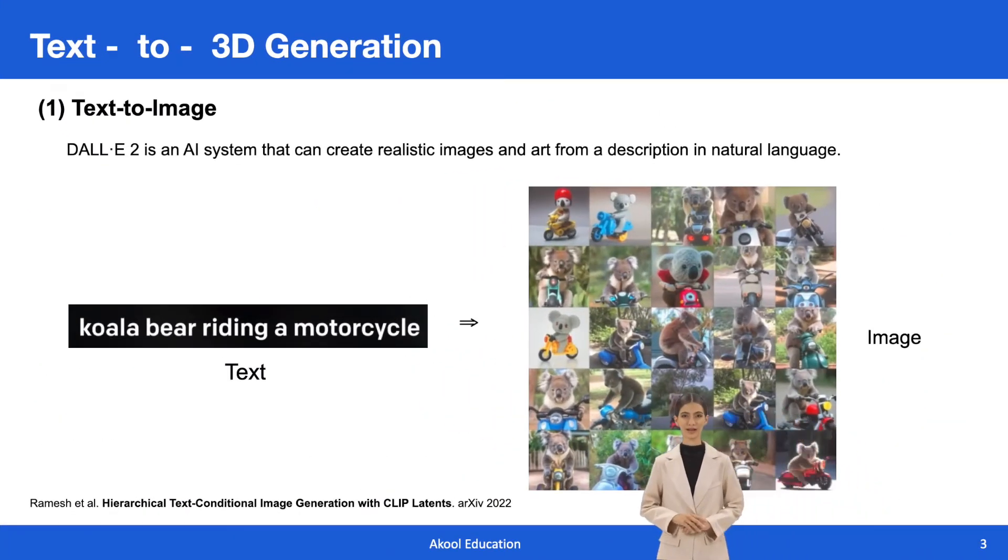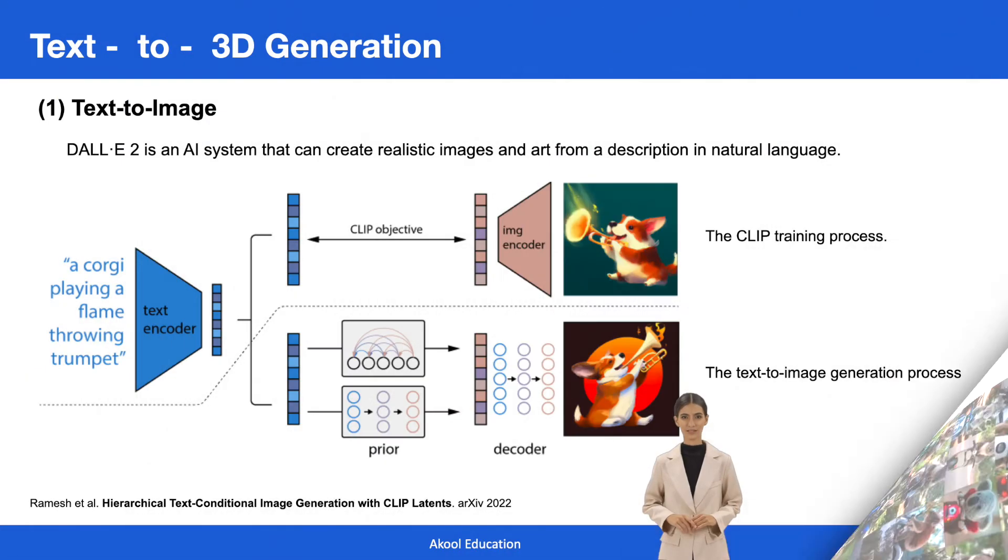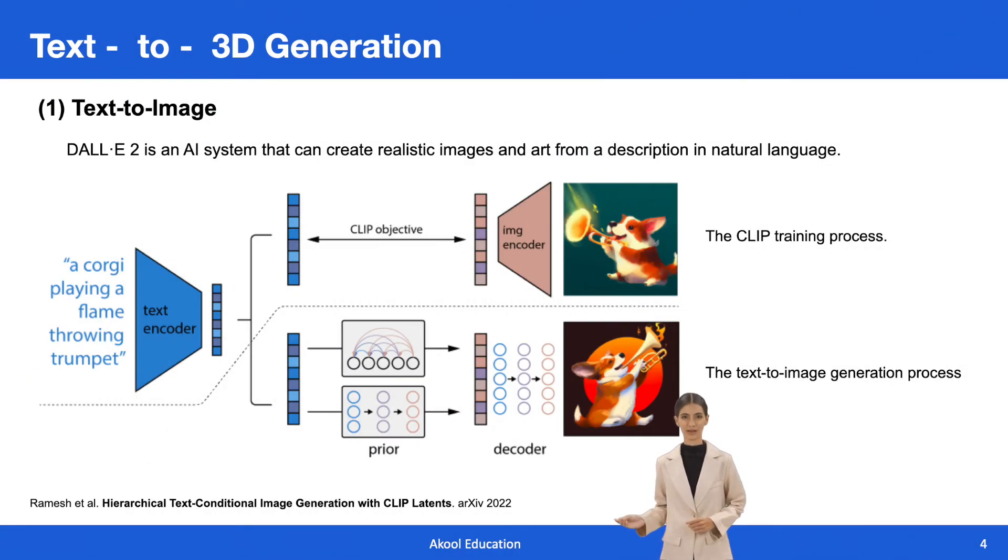DALL-E 2 is an AI system developed by OpenAI with the capability to generate realistic images and artwork based on natural language descriptions. Contrastive models, such as CLIP, have demonstrated the ability to learn robust representations of images that encompass both semantics and style. In order to harness these representations for image generation, DALL-E 2 introduces a two-stage model: a prior that produces a CLIP image embedding from a given text caption, and a decoder that generates an image conditioned on the obtained image embedding. This model excels in synthesizing a variety of high-quality images, offering a versatile and impressive capability based on textual descriptions.